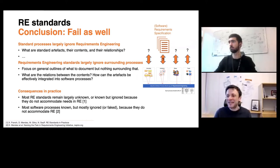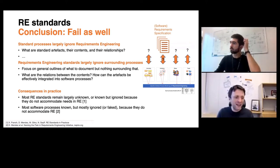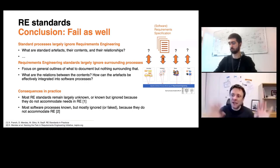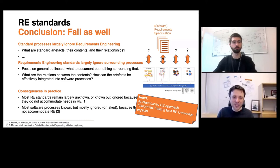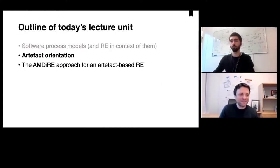One of the consequences in practice is that most requirements engineering standards are largely unknown, and even those that are known are typically ignored because they don't accommodate the real needs of projects. At the same time, most software process models are known but mostly ignored — sometimes even faked, with people claiming to develop using Scrum while doing something different. There's a classic gap between theory and how things are really done in practice.